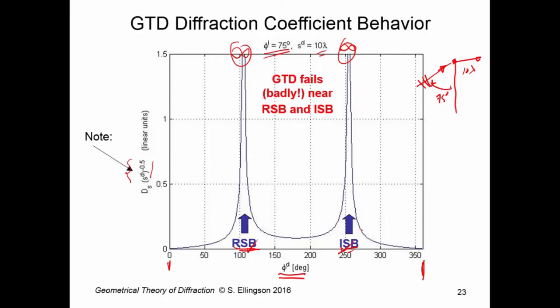So, as a result, the GTD solution, which we haven't computed yet, but which is based on this diffraction coefficient, will fail. And it will fail badly around these two points. We'll also see, however, that it works pretty good away from those points. So, in these regions here that I'm indicating, the GTD diffraction coefficient turns out to be very good. It's just around the incident shadow boundary and the reflection shadow boundary that it fails.